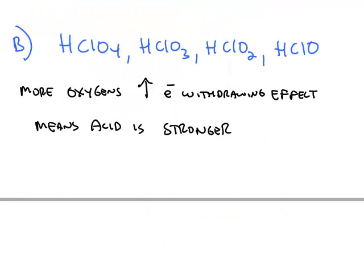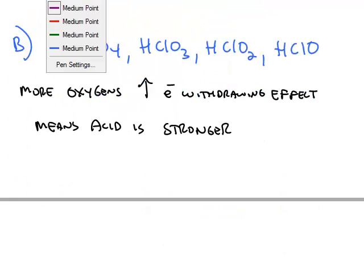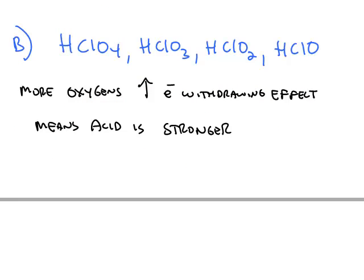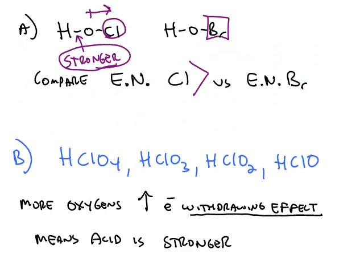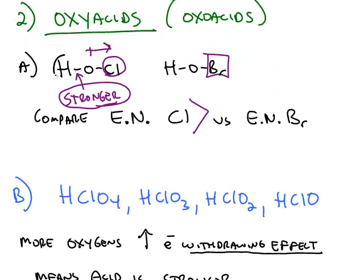You also have oxyacids that have the same electronegativity, here's one where all of them are chlorines, but they have more oxygens, and that increases the electron withdrawing effect. More of those negative electrons are going to ultimately weaken this acidic bond, and it's going to make that hydrogen more easily removed.